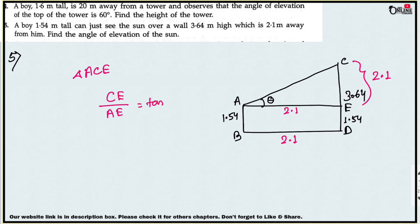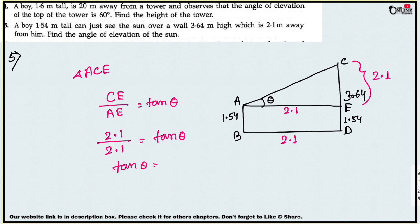From triangle ACE: CE by AE equals tan theta, and CE equals 2.1, AE equals 2.1, so tan theta equals 1. Therefore theta equals 45 degrees.